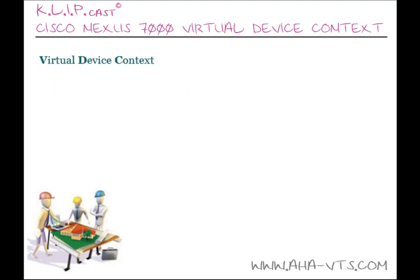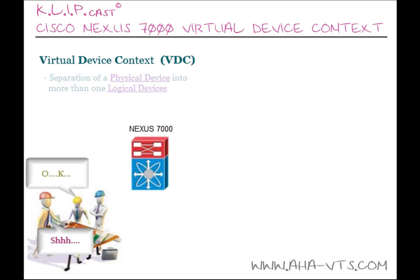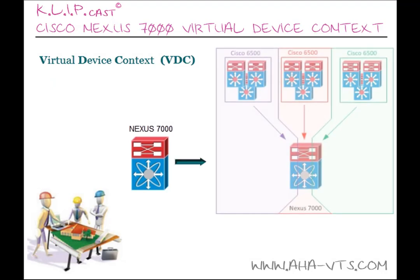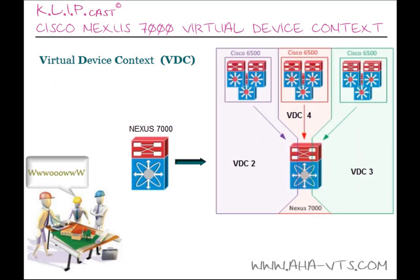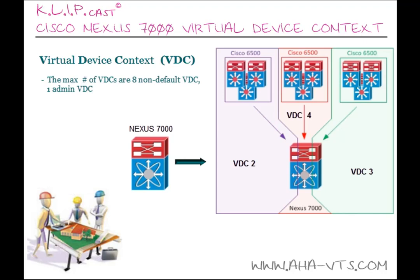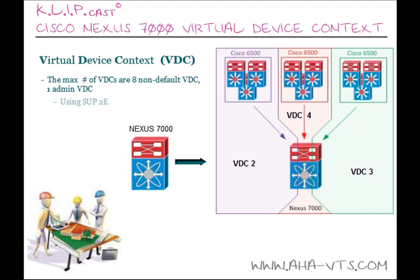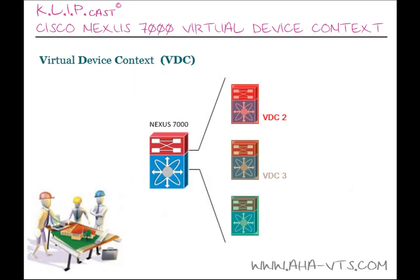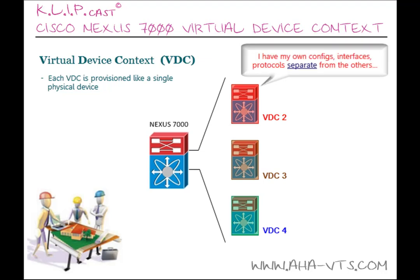A Virtual Device Context, or VDC for short, allows for the partitioning of a single physical device — in this case, a Cisco Nexus 7000 — into multiple logical devices. Currently, the maximum number of VDCs that a Cisco Nexus 7000 can support are eight non-default VDCs and one admin VDC using a SUP2E. Each VDC is a virtualized entity that can be provisioned, configured, and managed as if it was a separate physical device.